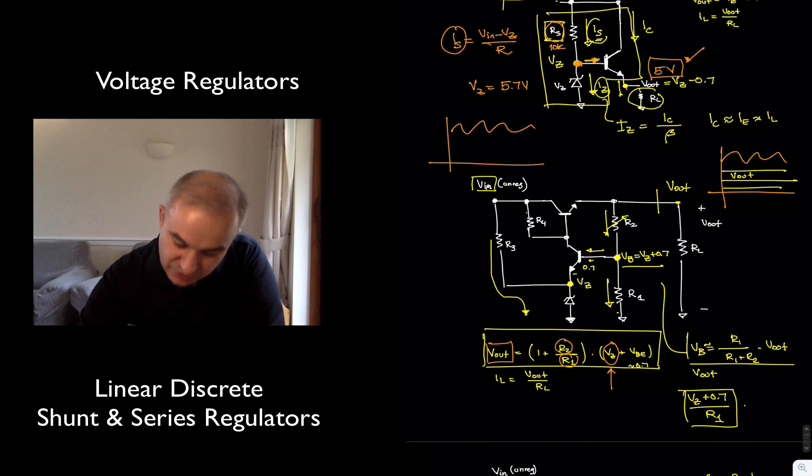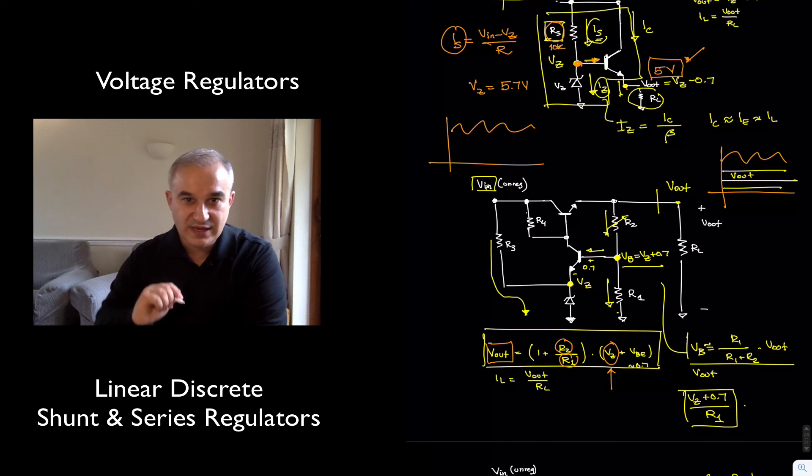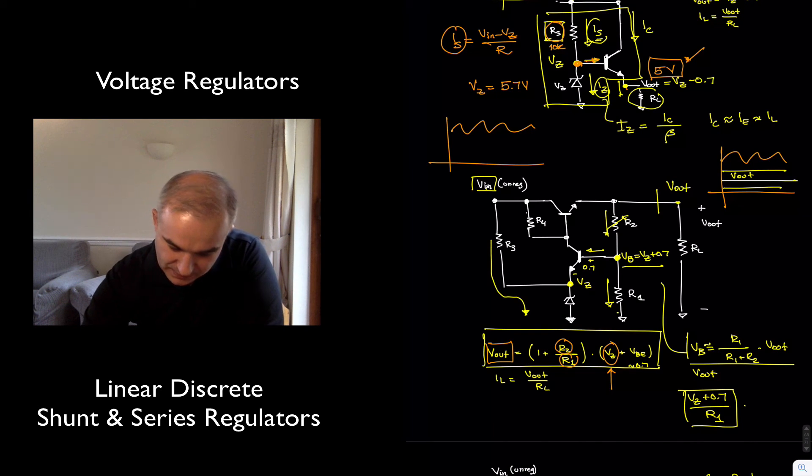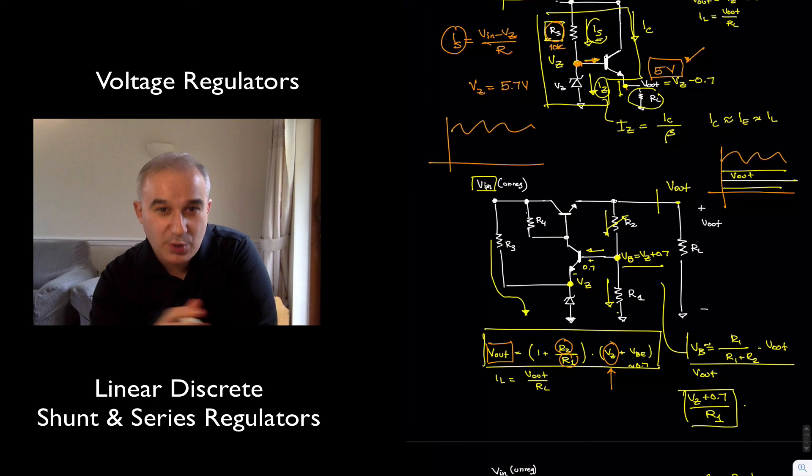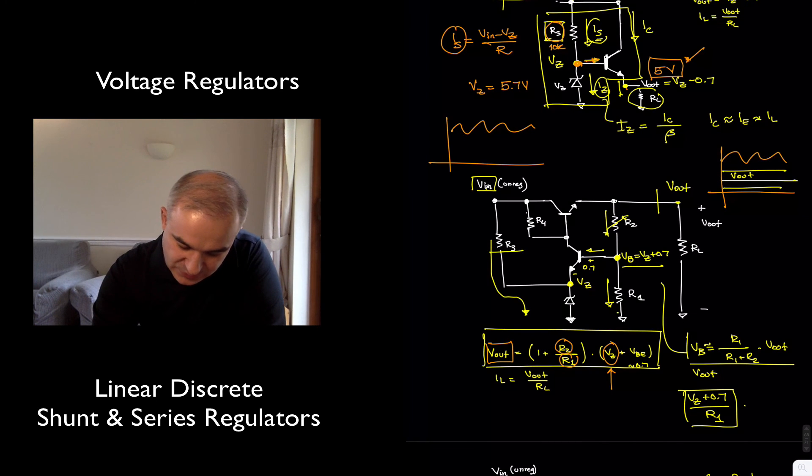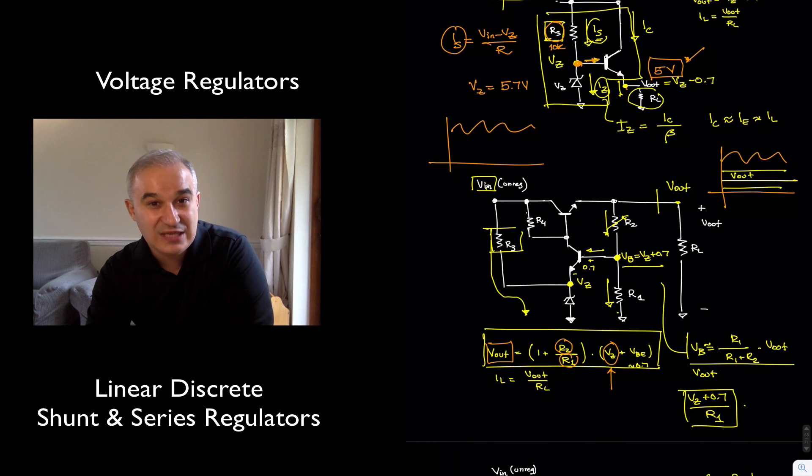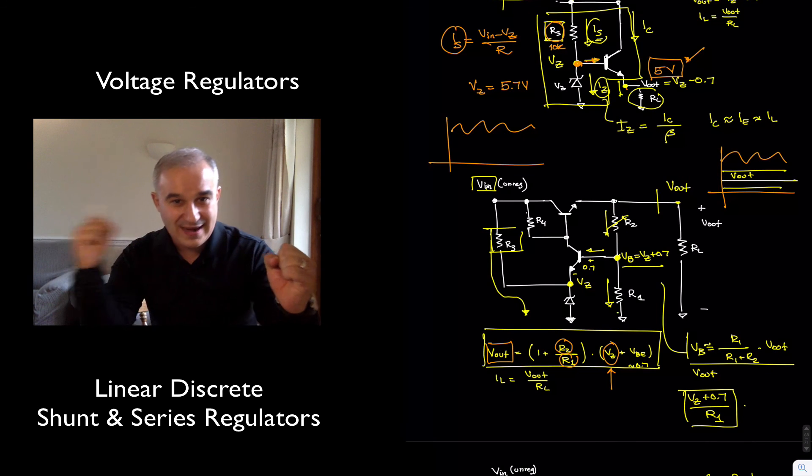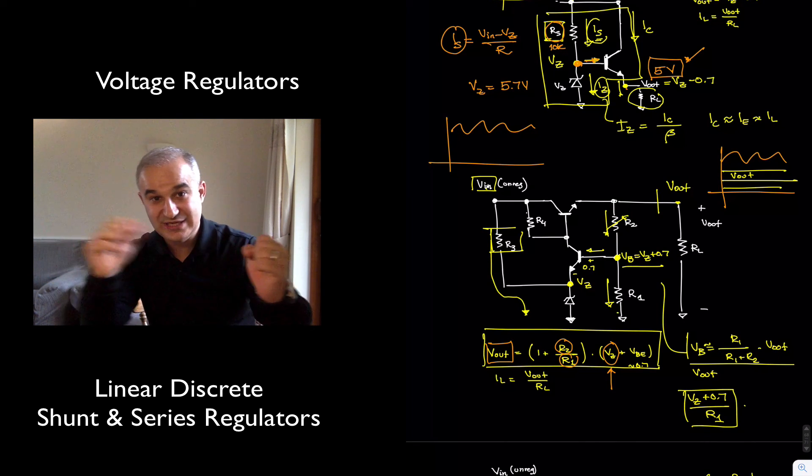So we put a potentiometer here, we can regulate the output. Now notice also that contrary to the shunt regulators that we saw, this resistor is not going to need to be as large as before, because it's not in parallel, it's not in series with the output.